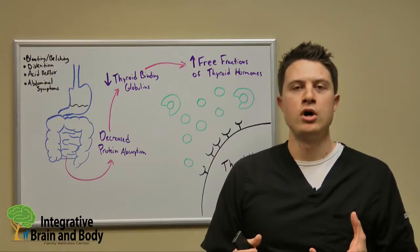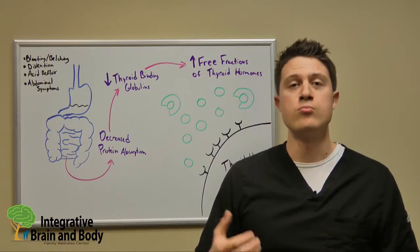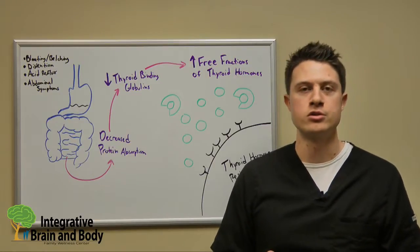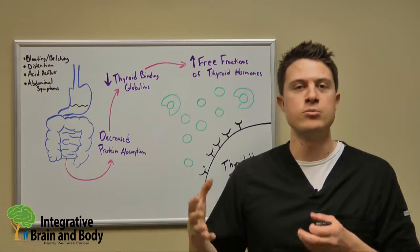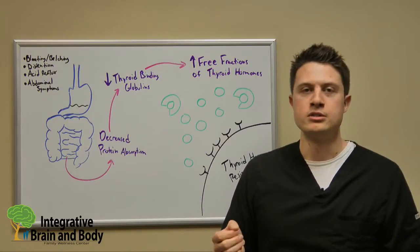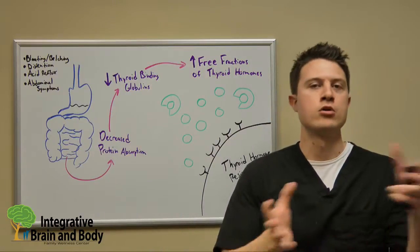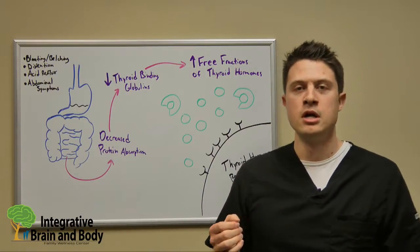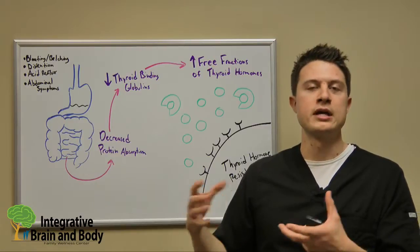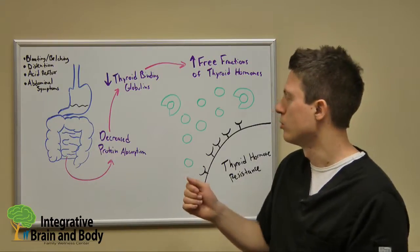When it comes to protein in our bodies, one of the more important protein structures are called globulins. This can be measured on blood work, but globulins have a bunch of different functions in the body. One of them is for our immune system, like immunoglobulins, but other ones are for regulating hormones, and thyroid hormone is one of them.